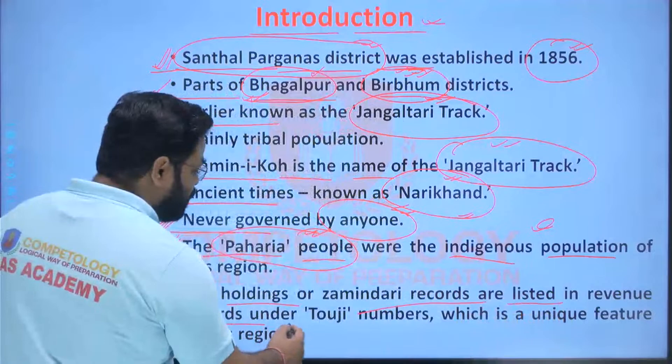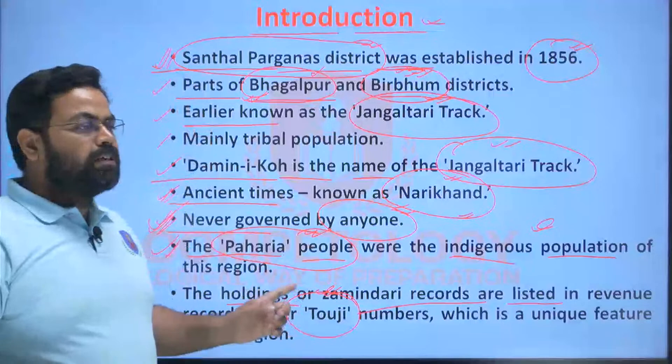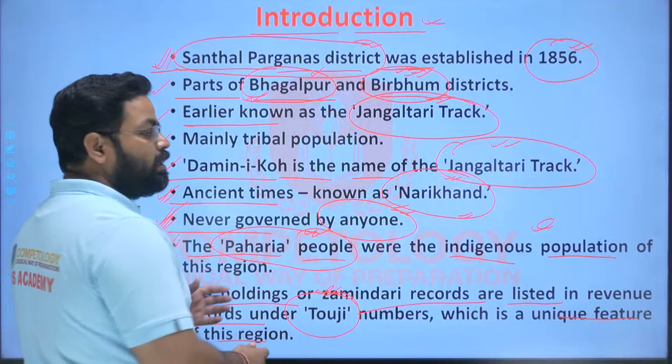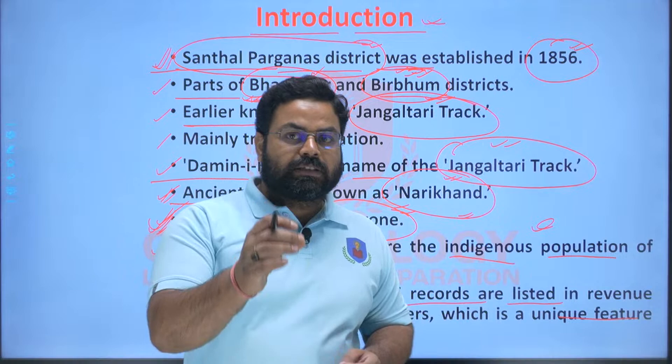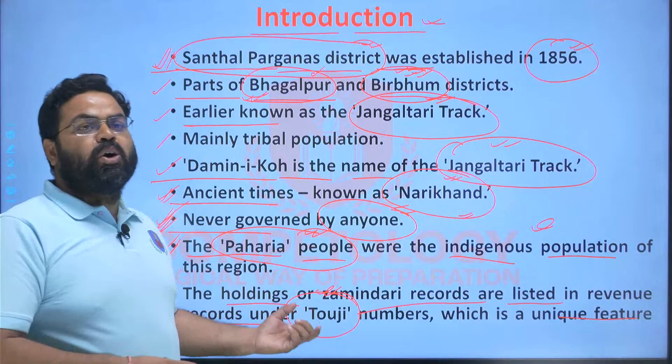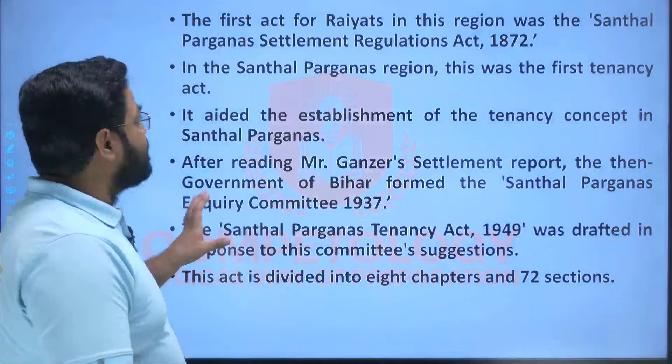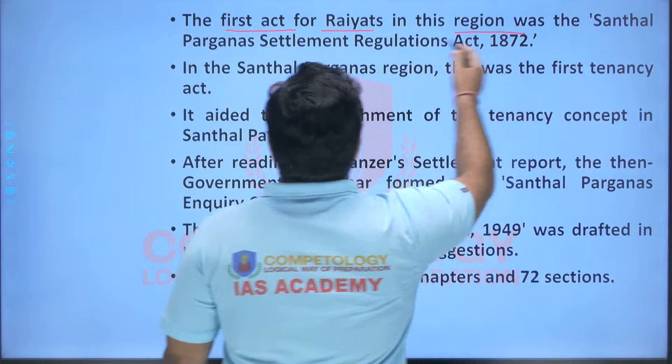The Tawji number is a special and unique feature of the Santhal Pargana region. Like in other Jharkhand districts you will find Thana number and Khasra number in land records, similarly in the Santhal Pargana region there is a Tawji number. The first act for addressing the revolts in this region was the Santhal Pargana Settlement Regulation Act of 1872. Many rules and regulations and reforms were introduced by the British administration from time to time to address the discontent among the tribal people.